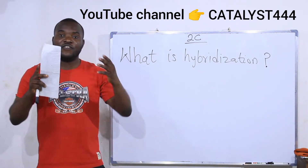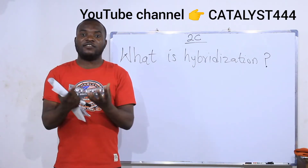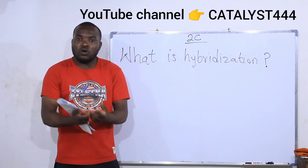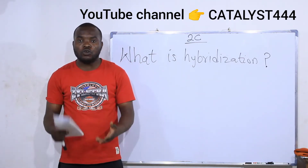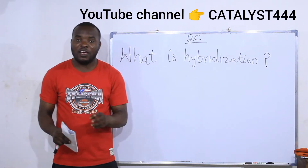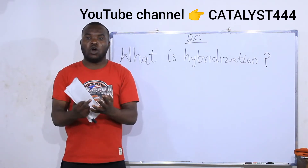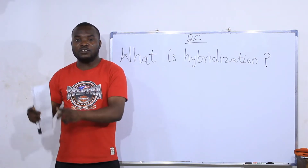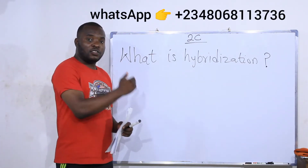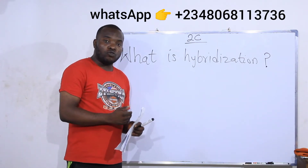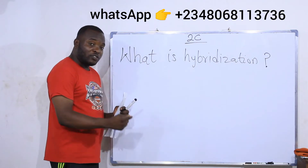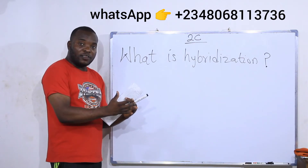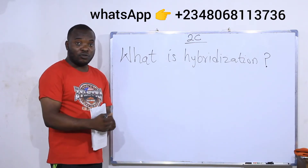Hybridization is defined as the mixing up of atomic orbitals to produce hybrid orbitals. If I mix different orbitals, I will produce a new orbital. That process of forming new hybrid orbitals by mixing up other orbitals is what we call hybridization.